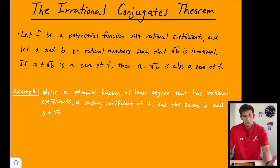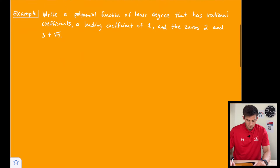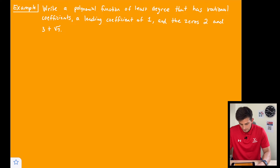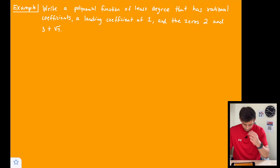So how can we use the Irrational Conjugates Theorem? That's where our example comes in. We want to write a polynomial function of least degree that has rational coefficients, a leading coefficient of 1, and the zeros 2 and 3 plus the square root of 7.